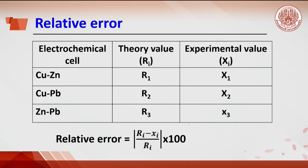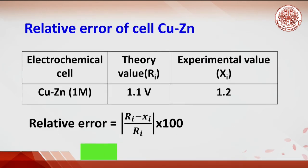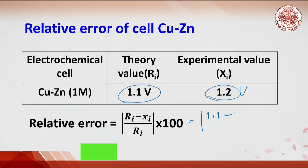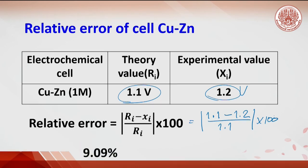Finally, compare the EMF from experiment and theory to calculate the relative error. The theoretical EMF is calculated from the Nernst equation. For example, in the copper-zinc cell, the Nernst equation gives 1.1 volts. If the experimental value is 1.2 volts, the relative error is: |1.1 minus 1.2| divided by 1.1, times 100, giving approximately 9%.